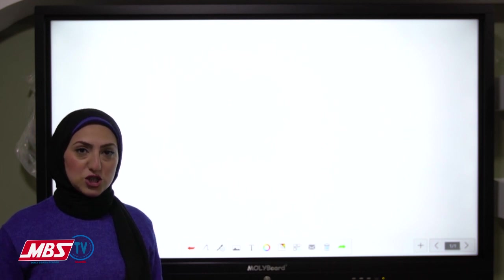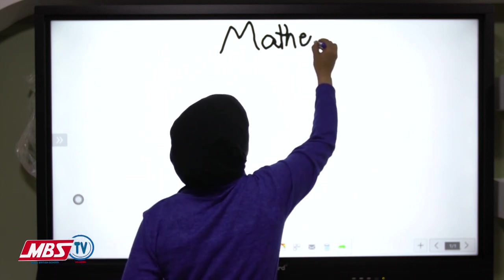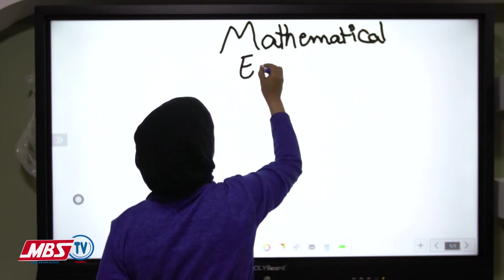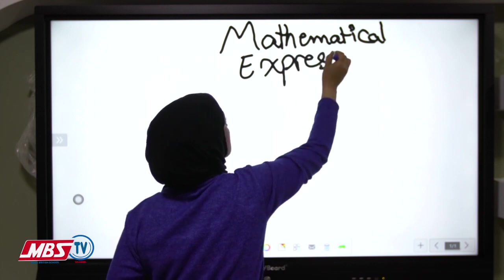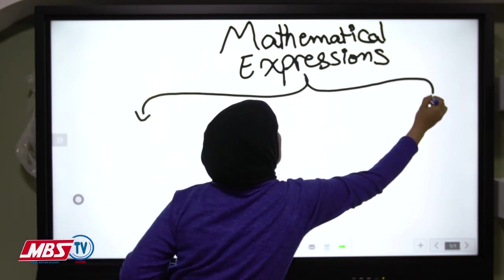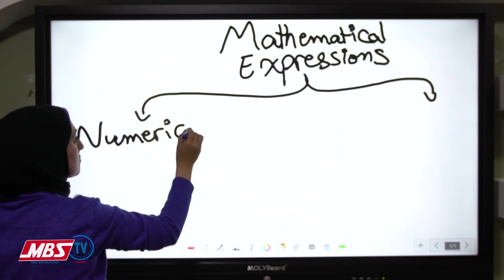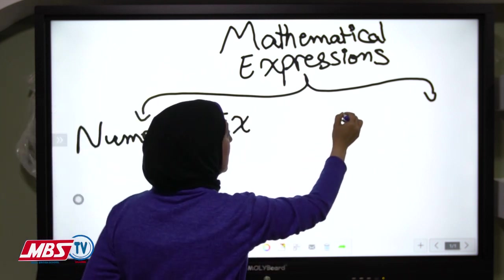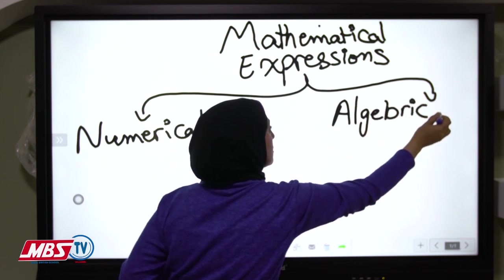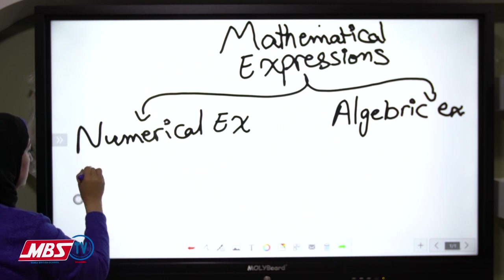What is the meaning of mathematical expressions? Mathematical expressions has two kinds: numerical expressions and algebraic or symbolic expressions.